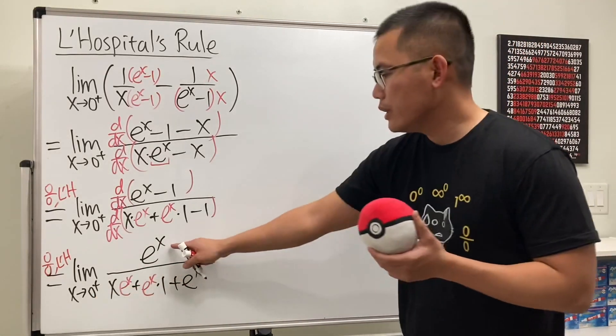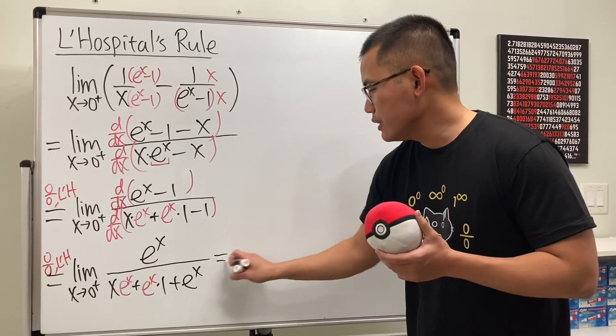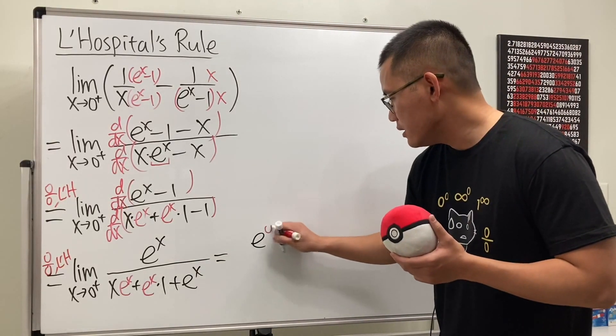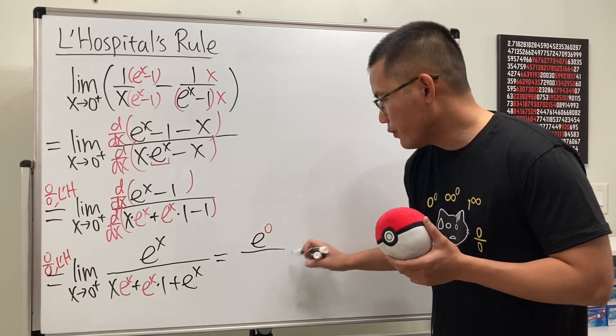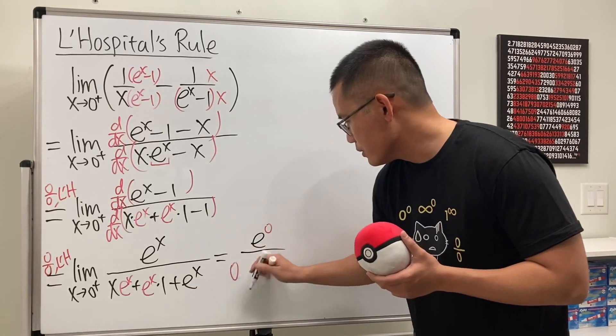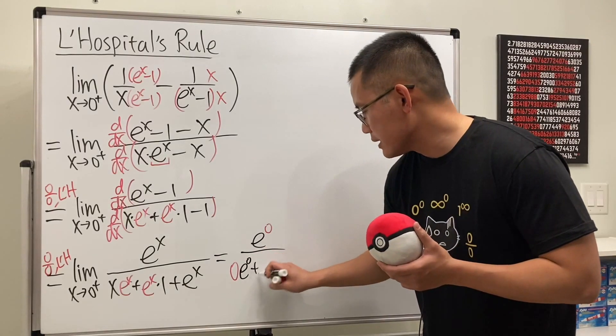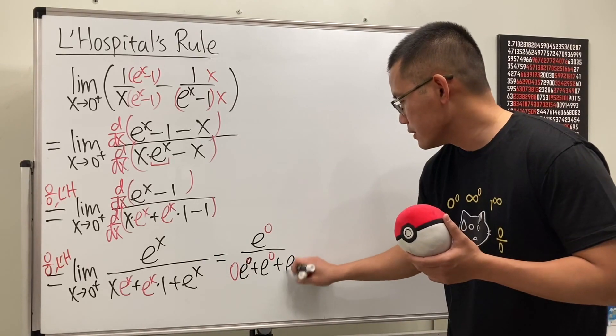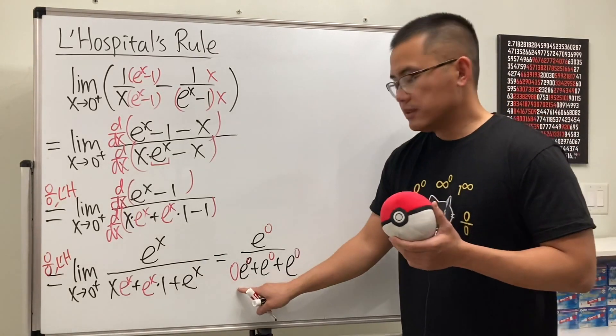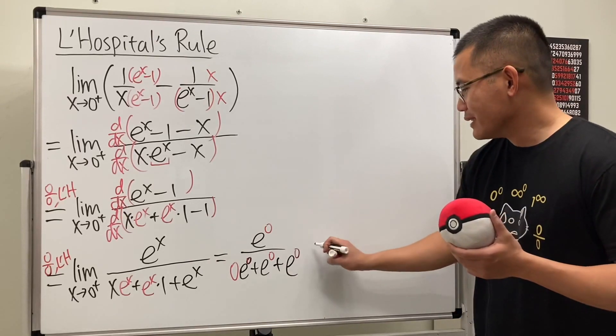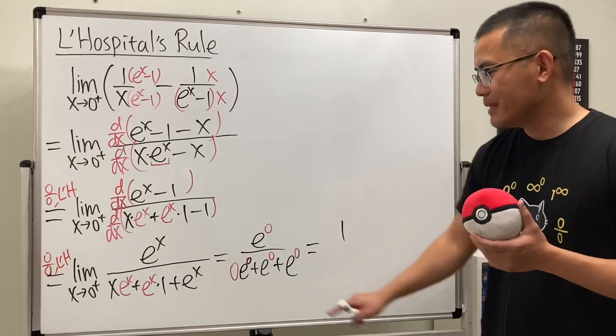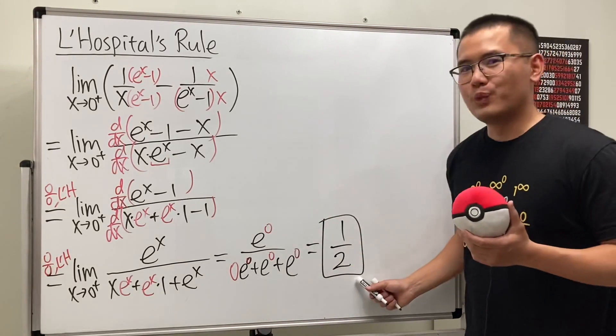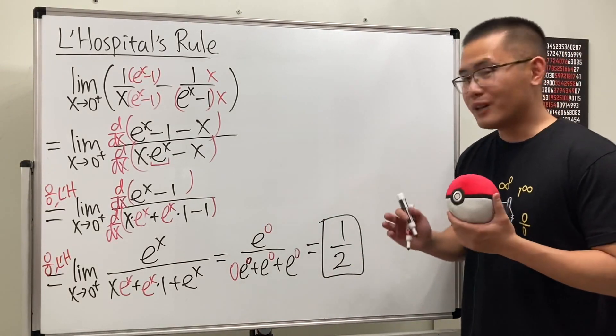Lastly, plugging 0 into all the x's, you don't need to write down 0 plus, because you will see all the numbers work out very nicely. So we have e to the 0 over 0 times e to the 0, plus e to the 0, and then lastly, another e to the 0. This is 0, this is 1, this is 1, this is 1. So altogether, we have 1 on the top, and then 1 plus 1 on the bottom. So, ladies and gentlemen, the answer is just 1 over 2. And then we are done.